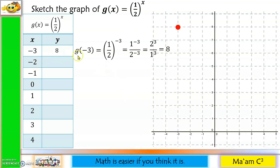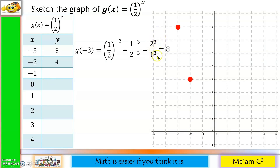For x = -2: following the same process, we get 2 squared over 1 squared, which is 4 over 1, or 4. We plot negative 2 at positive 4. For x = -1: we get 2 to the first power over 1, which is 2 over 1, or 2. We plot negative 1 at positive 2.